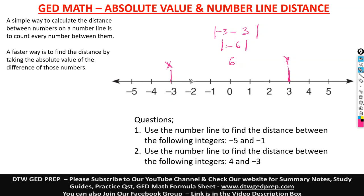Another way to count it: count how many spaces from negative 3 to zero — that's 1, 2, 3 — then how many spaces from zero to positive 3 — that's 1, 2, 3. Add them up and you still get 6, a positive 6. Remember, distance is always positive.